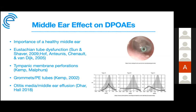A normal and healthy conductive mechanism in the outer and middle ear is essential for OAE measurement, as both the stimulus and generated emission must pass through these structures. Acoustic immittance testing (tympanometry) is an important test to perform prior to OAEs. Middle ear pathologies will have a profound effect on both forward and backward energy transmission, as shown in studies by Kemp in 1979 and Owens in 1992.